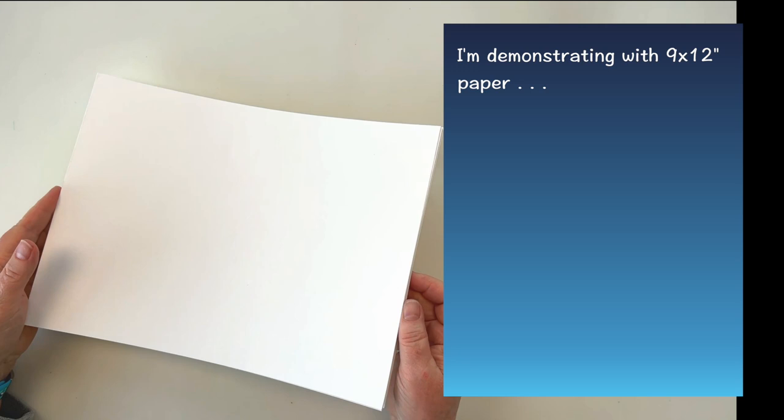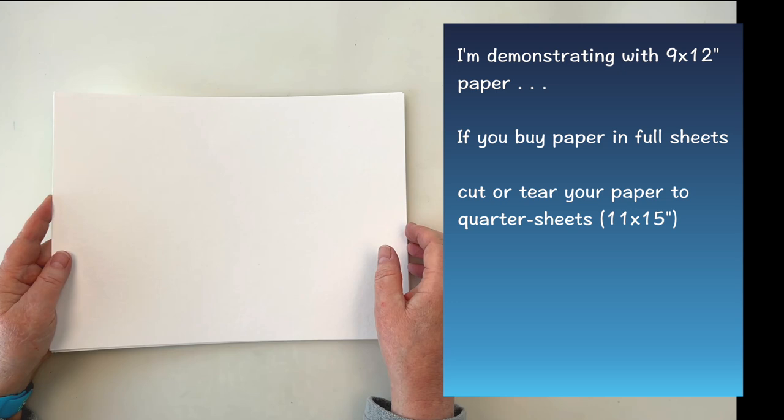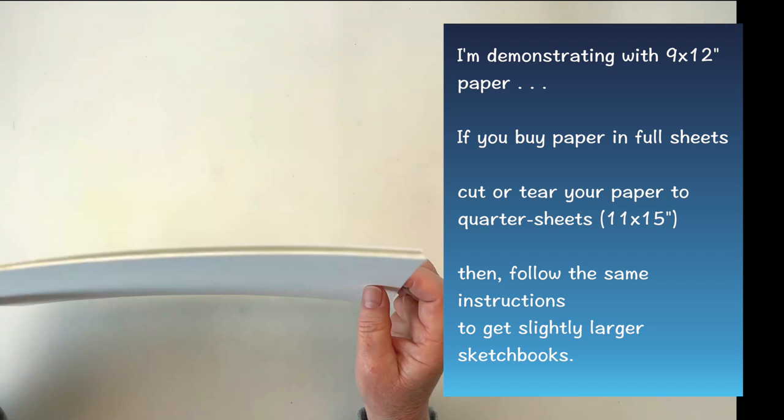I'm going to show all of these examples starting from pieces of 9x12 paper because that seems to be a very common size for people to buy these days. If you normally buy full sheets of watercolor paper, you can tear them down to quarter sheets, which is a little bit bigger than 9x12, and you'll get the same little sketchbooks just a little bit bigger.